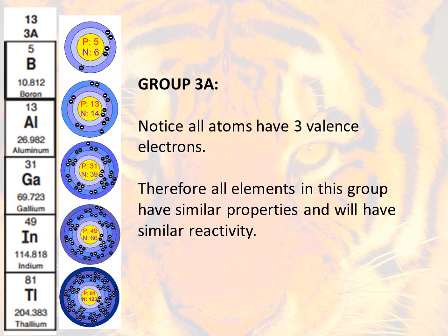So here it is for you. Group 3A. If you look at every single one of these Bohr models, you're going to notice they all have three valence electrons. One, two, three. One, two, three. One, two, and three.